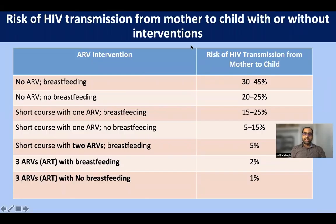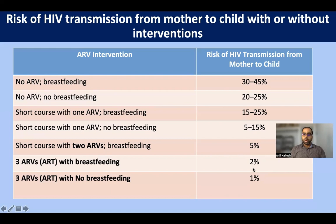This slide explains the risk of transmission from mother to child with or without interventions. If the pregnant woman is strictly adherent to triple antiretroviral therapy and not breastfeeding, the risk of transmission is just 1% or even less. If she is breastfeeding with strict adherence to ART, the risk increases marginally to just 2% — only a 1% difference. This explains the importance of breastfeeding, which protects the baby from many other childhood diseases.